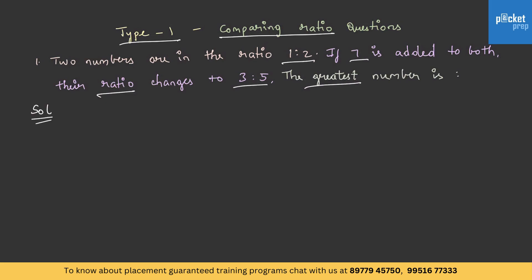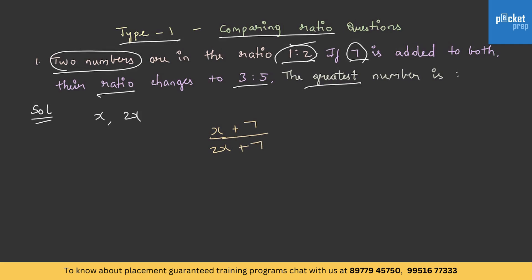To solve this, let us understand the given data. It is given that two numbers are in the ratio 1 is to 2, so let us assume the two numbers as X and 2X. Seven is added to both the numbers, so we get X plus 7 by 2X plus 7. After adding 7, the ratio has changed to 3 is to 5. So let us equate X plus 7 by 2X plus 7 to 3 by 5, and cross multiply.